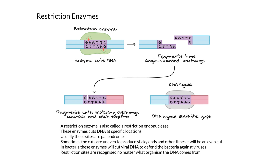Usually the sites that restriction enzymes cut at are palindromic, which means it reads the same forward and backward. An example of that in our language would be 'madam' or 'racecar.'